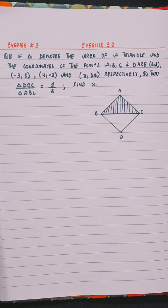If delta denotes the area of a triangle and the coordinates of the points A, B, C, and D are (6,3), (-3,5), (4,-2), and (x,3x) respectively,